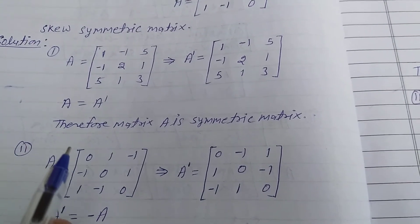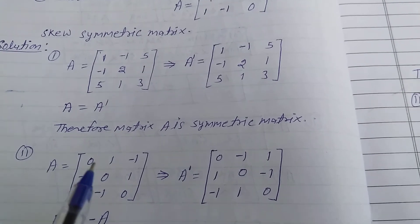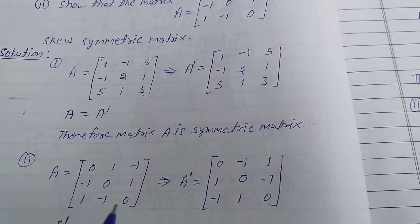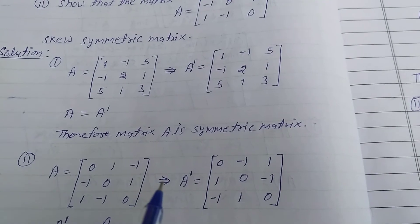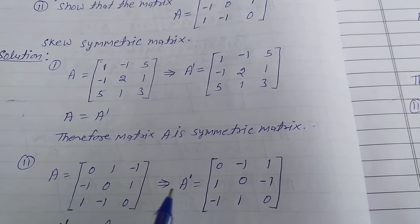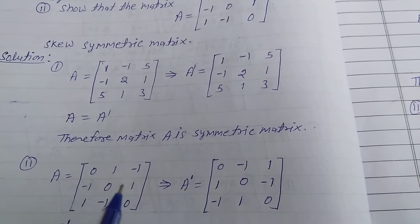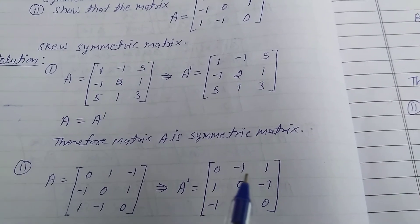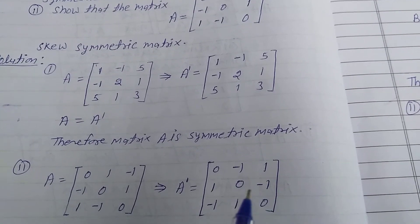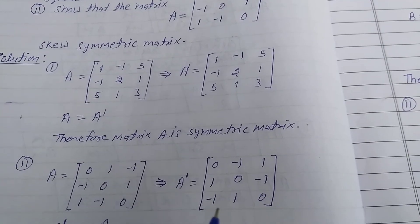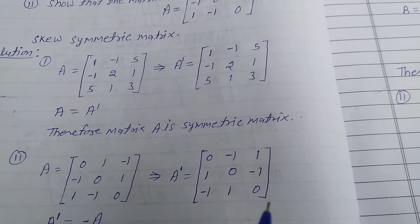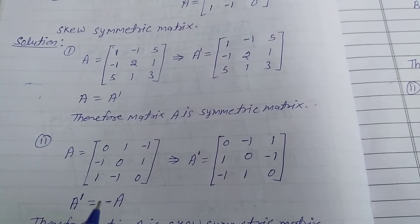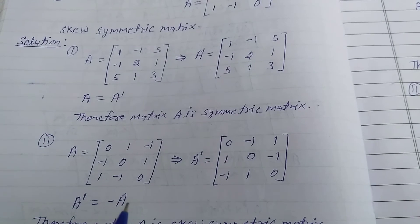Second part: take matrix A equal to [0, 1, -1; -1, 0, 1; 1, -1, 0]. Find the transpose of A by converting rows to columns, giving transpose of A equal to [0, -1, 1; 1, 0, -1; -1, 1, 0]. Therefore transpose of A equals minus A.